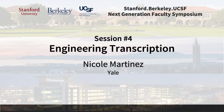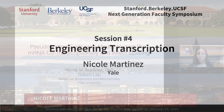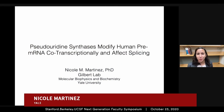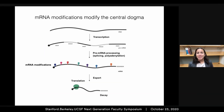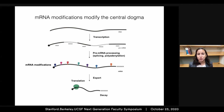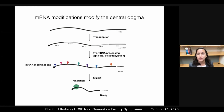I'd like to thank the organizers of this symposium for this wonderful opportunity and for highlighting my work. The central dogma states that DNA is transcribed into pre-messenger RNA, which is then processed by splicing to remove non-coding introns and join exons to produce mature messenger RNA that can then be translated into proteins to achieve cellular functions. All of these steps are highly regulated to control the expression of genes.